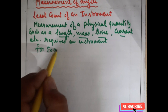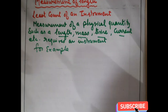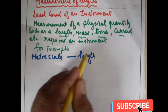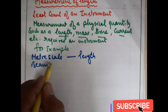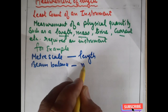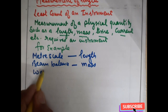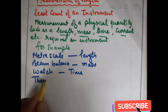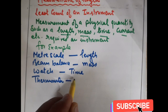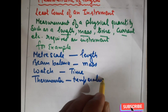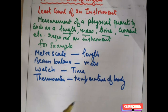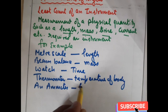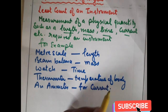For example, we can have a meter scale. Meter scale measures the length of an object. Beam balance measures mass of an object. A watch measures time. Thermometer measures temperature of a body or object. An ammeter is a device which measures current.